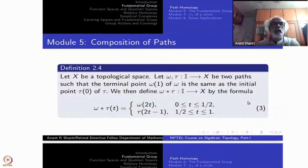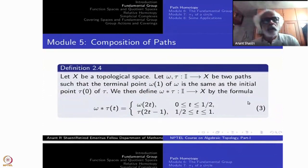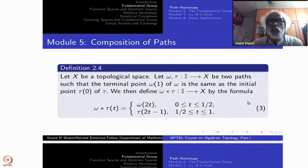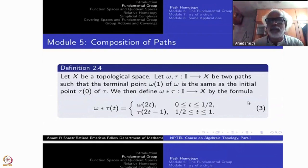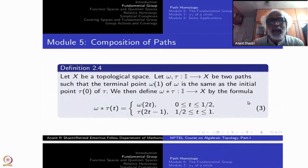Let us begin defining the composition of paths. Fix any topological space and take two paths. The first path ends at ω(1), so the endpoint of ω is ω(1). The starting point of the second path τ is the same as ω(1), so τ(0) = ω(1). In that case, we define ω★τ, omega followed by tau.